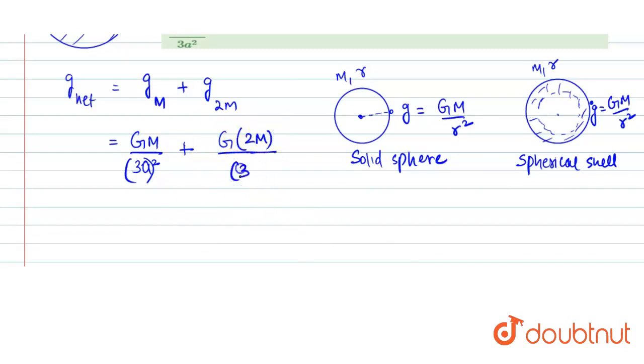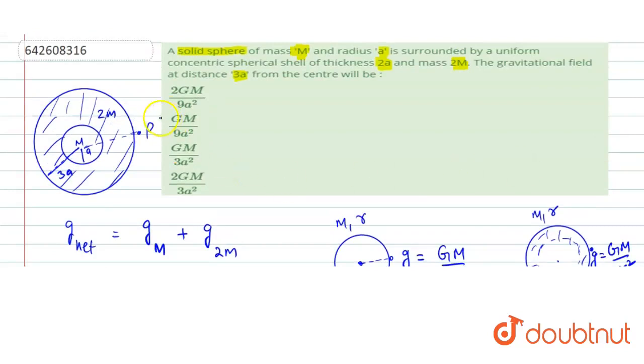divided by (3a)². That would become, we can take (3a)² as LCM, so that is 9a². So GM plus 2GM, that is 3GM. So it becomes GM upon 3a². So this is what the field is.